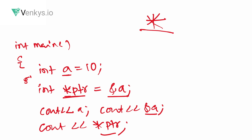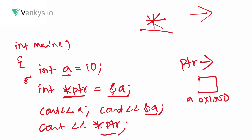Now let's look at the indirection operator, which is the combination of a hyphen and a greater-than symbol forming an arrow (->). In the same example, when you say ptr->, you are going inside the pointer variable. I have a pointing to ptr at address 0x1000, and the value at that address is 10.